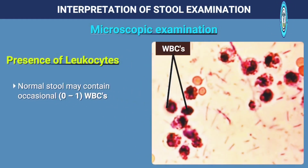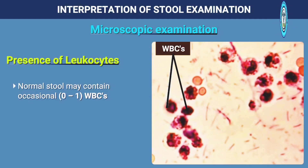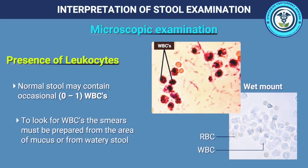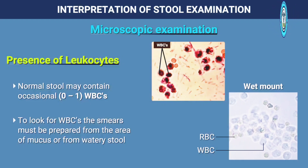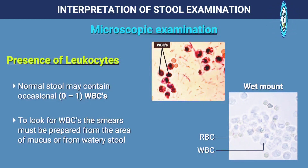Normal stool may contain occasional white blood cells. To look for white blood cells, the smear must be prepared from the area of mucus or from the watery stool.